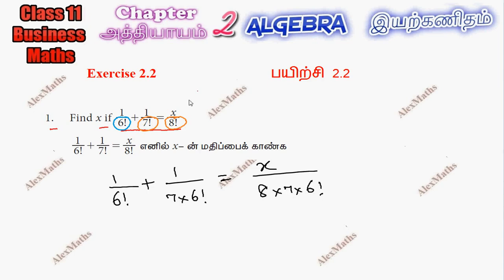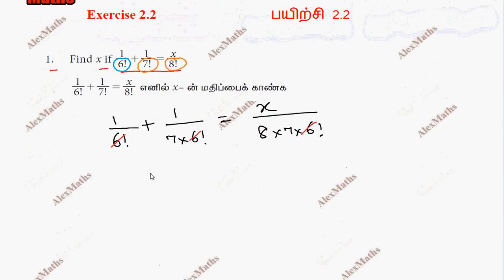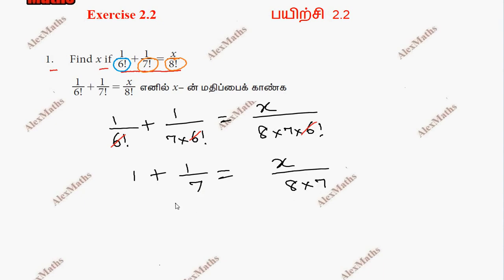Now, all terms have 6 factorial in the denominator, so it cancels as a common factor. The remaining equation is: 1 plus 1 by 7 equals x by 8 into 7. This simplifies to 7 plus 1 by 7 equals x by 8 into 7. On the right-hand side, 7 cancels.